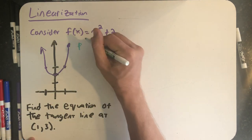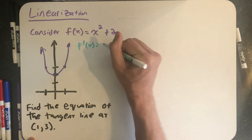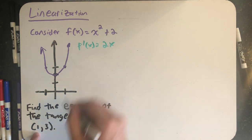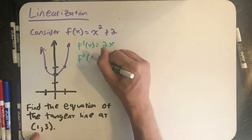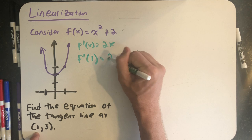Pretty easy derivative to work with. f prime of x is equal to 2x, and I know when I plug 1 into the function, I get out 3, and the slope of the tangent line I'm looking for will be f prime of 1, which is 2.